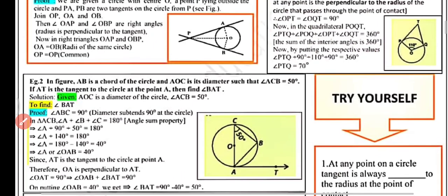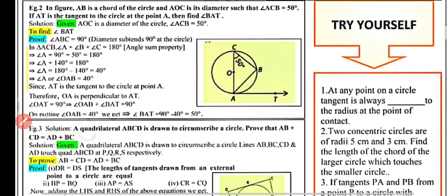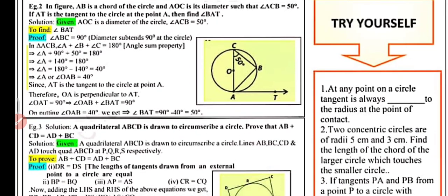Example 2: In the figure, AB is a chord of the circle and AOC is the diameter, with angle ACB = 50°. AT is a tangent to the circle at point A. Find angle BAT. Given AOC is the diameter and angle ACB = 50°.